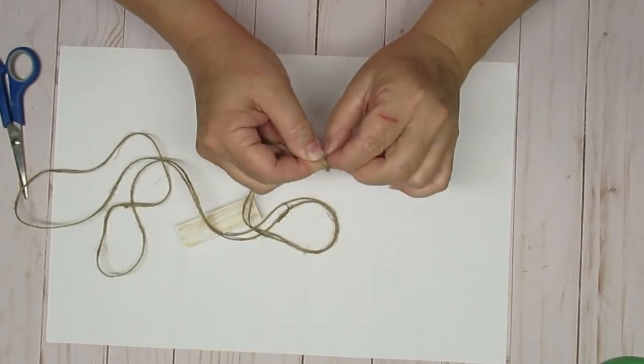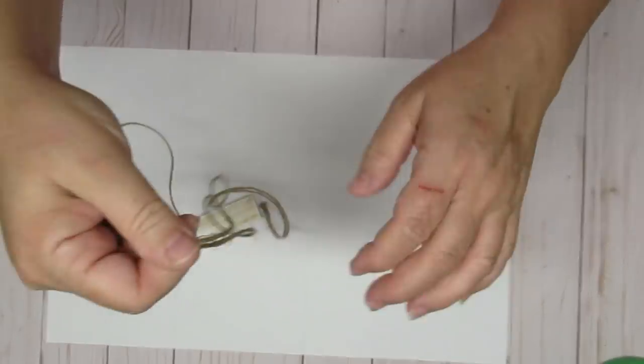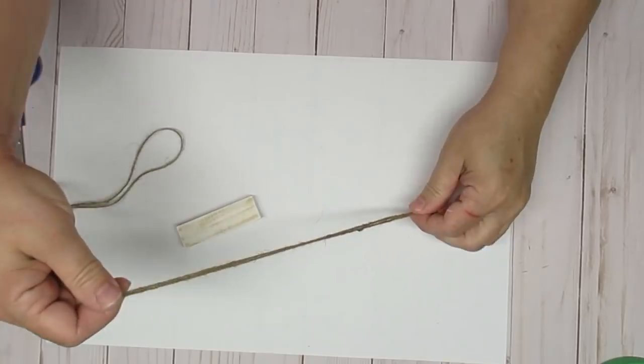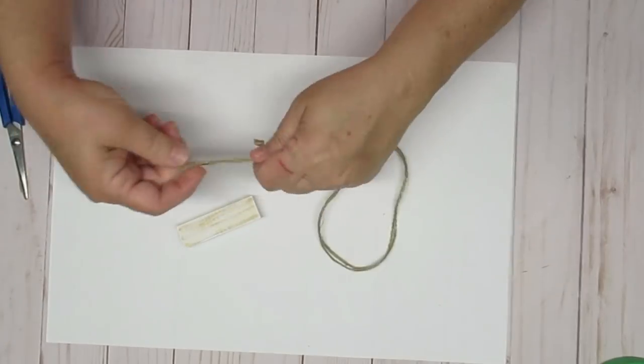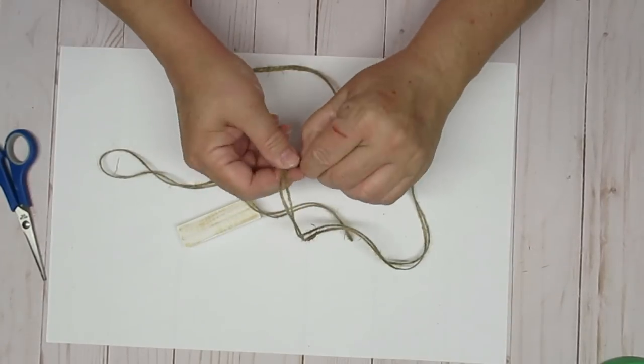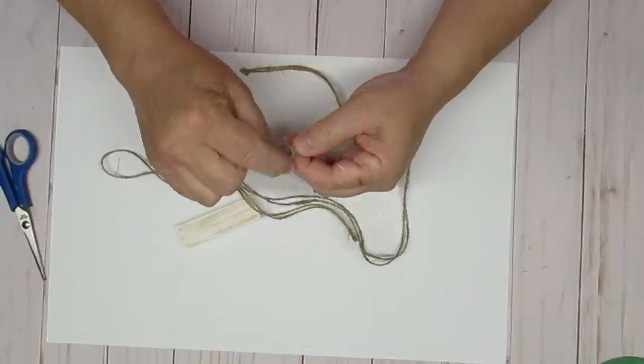Now I'm taking some twine and I'm doubling it up, tying a knot at one end, and then I'm going to cut a strand probably about 18 inches in length and tie a knot at the other end. Then I'll do that one more time.